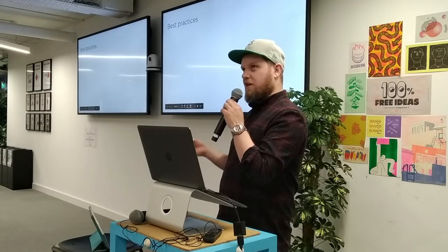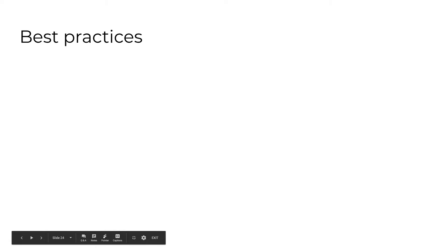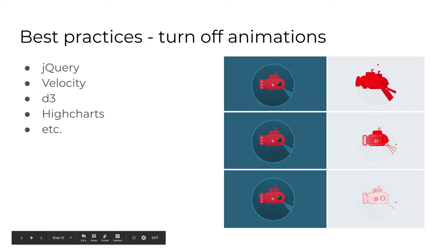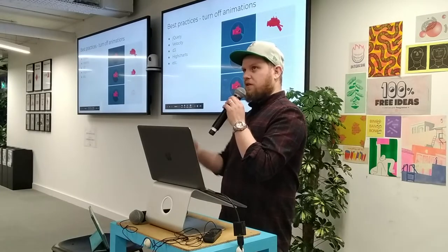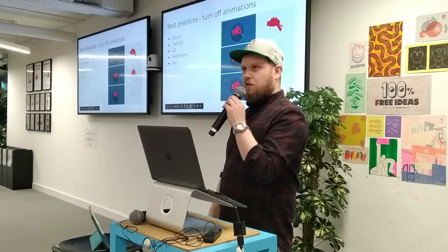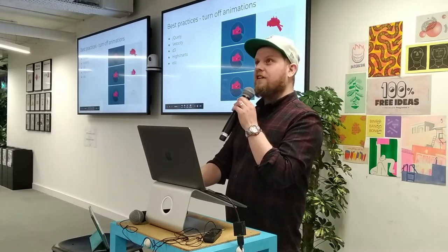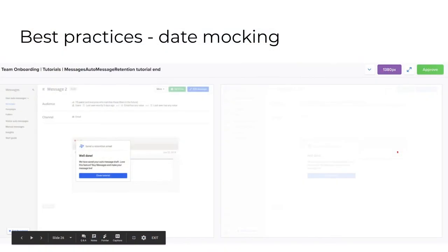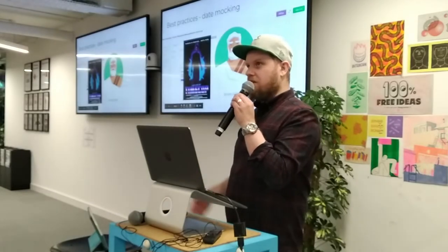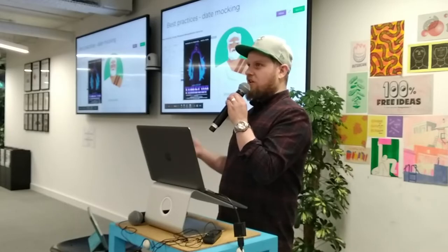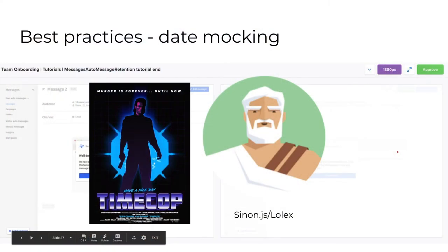If you want to use Percy, here are some best practices to reduce flakiness. Turn off your animations, because different snapshots will end up capturing different animation states. All the main libraries let you turn them off — for D3 it's non-trivial, but there's a highly-upvoted Stack Overflow answer out there. Date mocking is another one: the date was changing every day, so every day you'd have to re-approve. Libraries you can use are timecop.js, Sinon, and Lolex — which is used in Sinon but has been abstracted out.